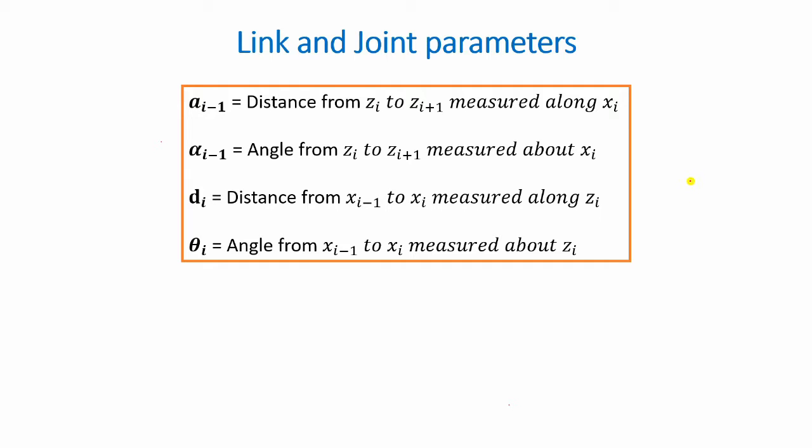If you look at these definitions, like I mentioned earlier, only two axes are needed. The z axis and the x axis. In this case, for example, z i would refer to the axis under question. While z i plus 1 would refer to the next joint axis. And z i minus 1 would refer to the previous joint axis.